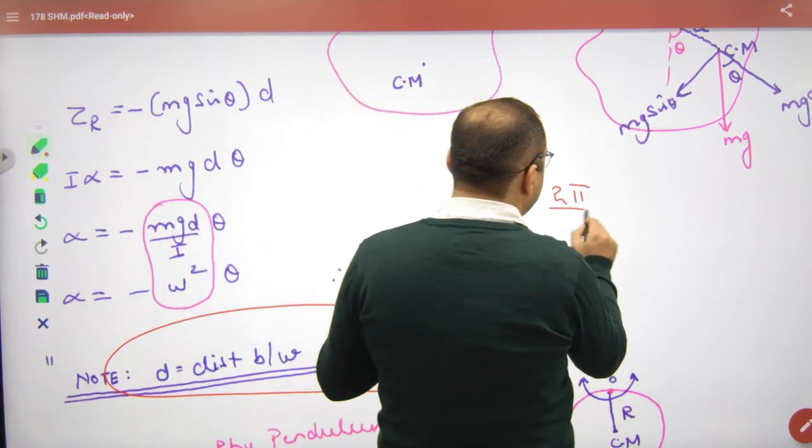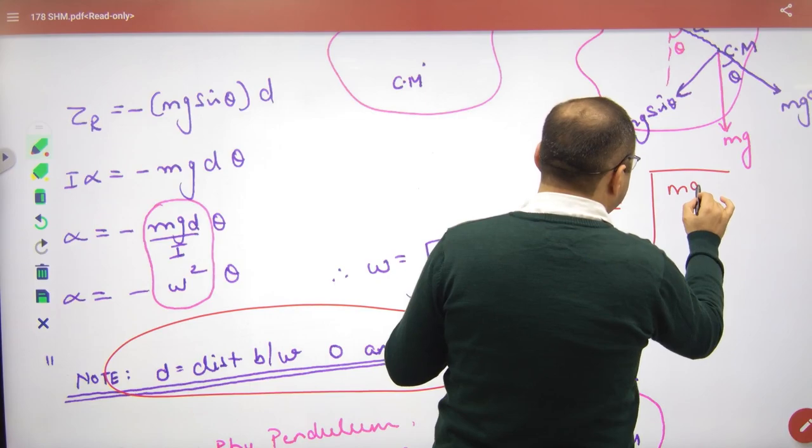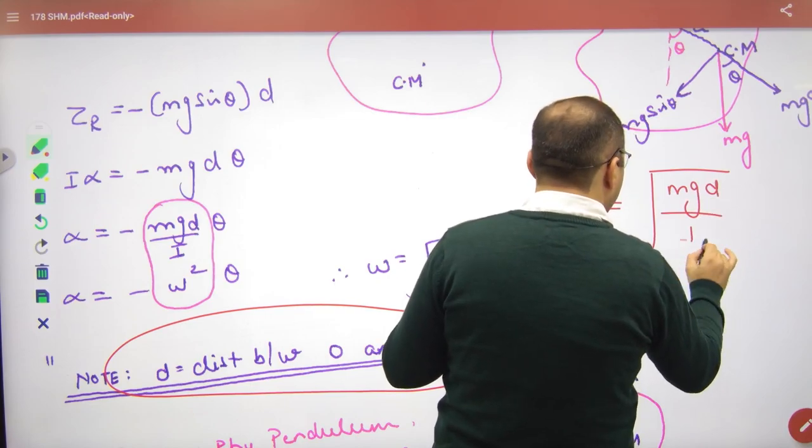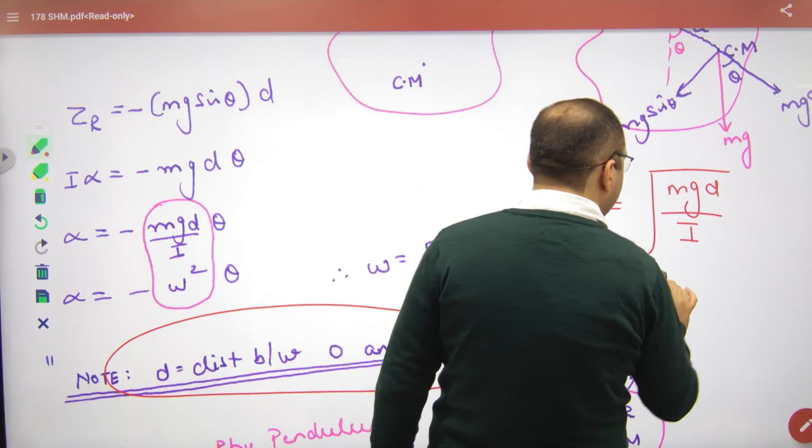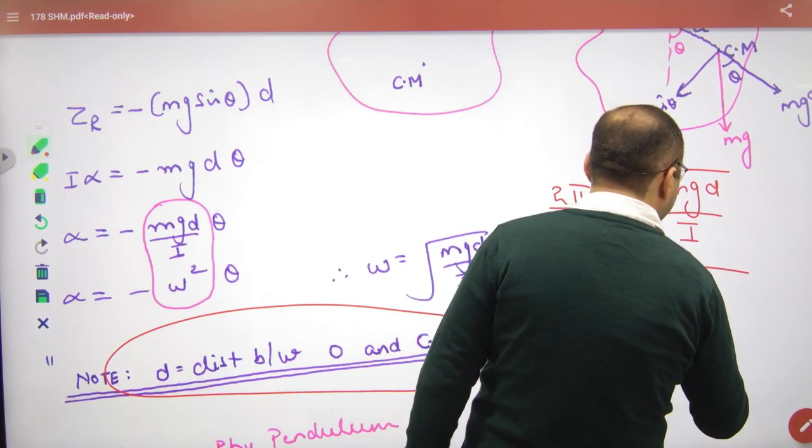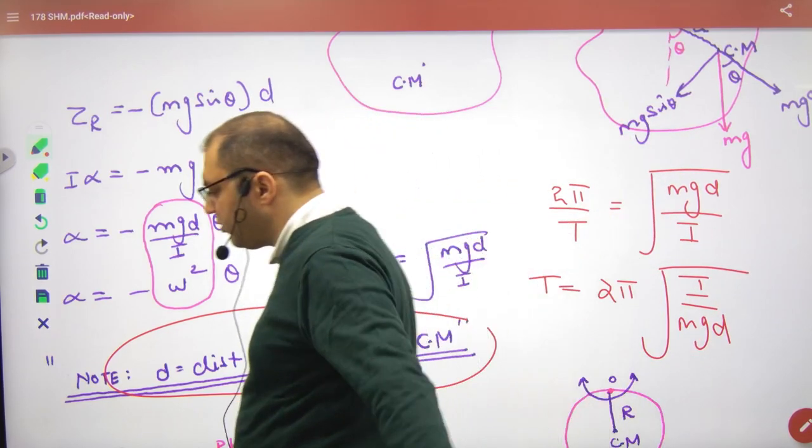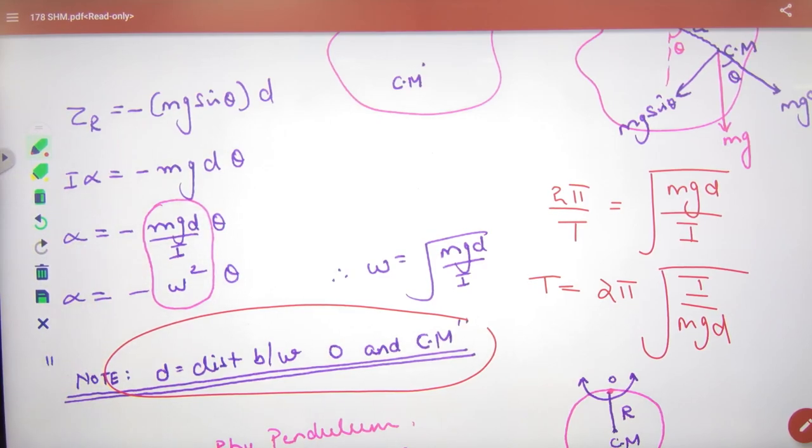Omega equals 2π by T is equal to under root of mgd by I. Cross multiply: T equals 2π under root of I upon mgd. Books also use this time period formula.